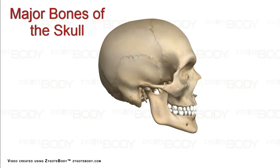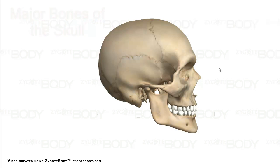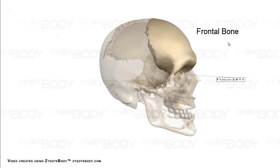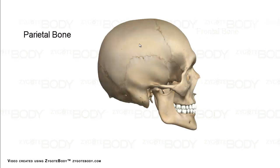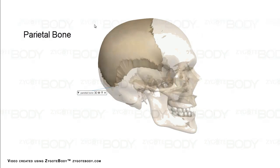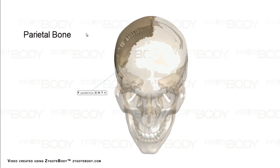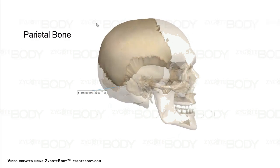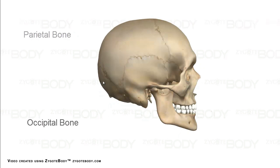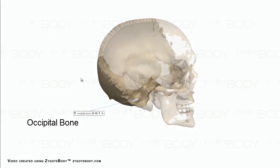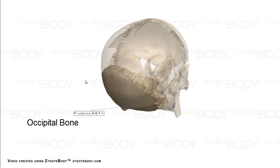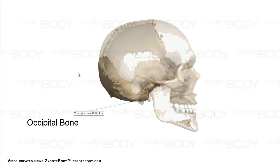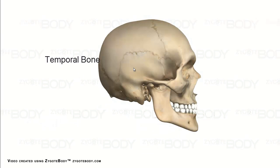Here we're going to look at some of the major bones of the skull. From this lateral view, we can see the frontal bone, the parietal bone, the occipital bone, and the temporal bone.